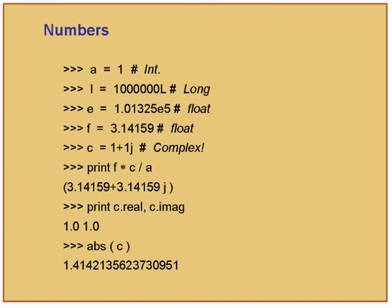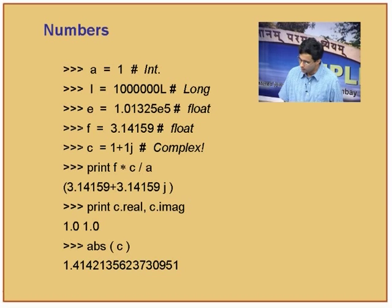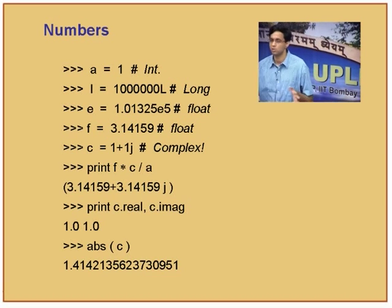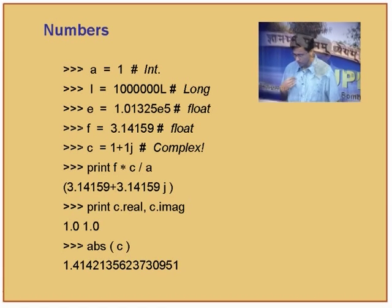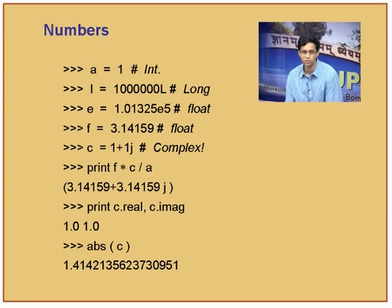Let's get on to numbers. The first is integers. You can say a is 1, 2, 3, 4, 5, minus 1, and so forth. But integers have a fixed binary representation, which means there is some integer beyond which you can't go. Python has a special type called long, which you create by saying an integer followed by a capital L. These are of any length, and if an integer overflows it becomes a long automatically. Longs can be as long as you want.